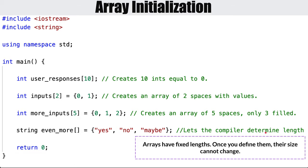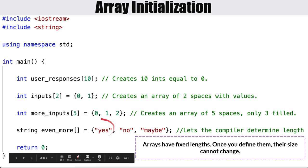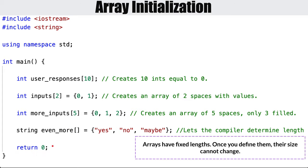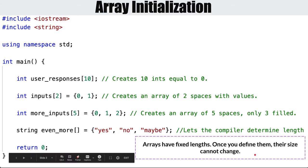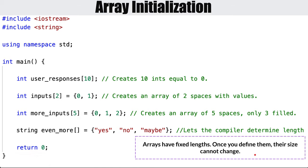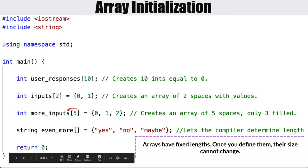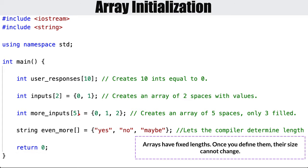The compiler will look at the values — yes, no, and maybe — and determine that's three, so it creates an array of three elements. The most important thing to take away is that arrays have fixed lengths. Once you define them, their size cannot change. If you gave it five elements, you cannot add a sixth later — you'd have to create a new array. So anticipate extra space if you need it.